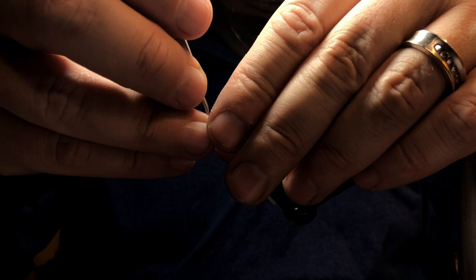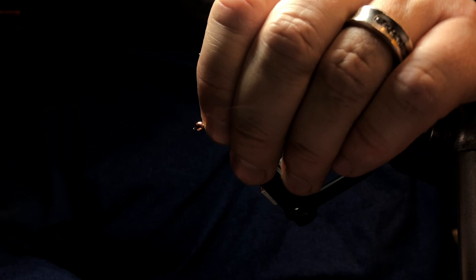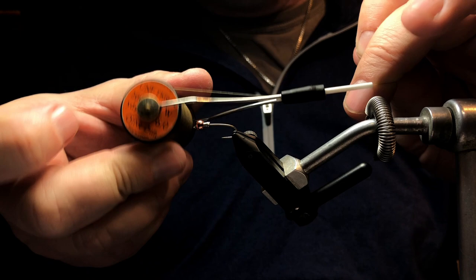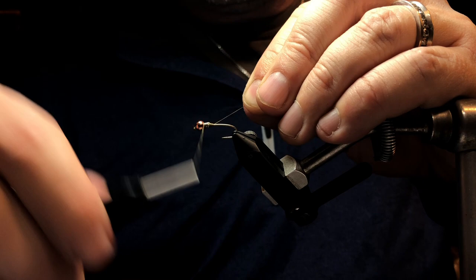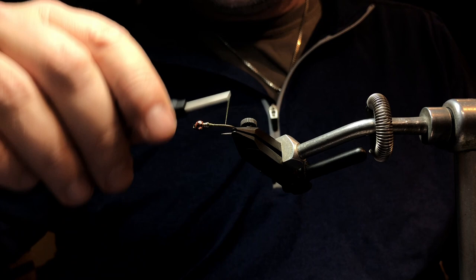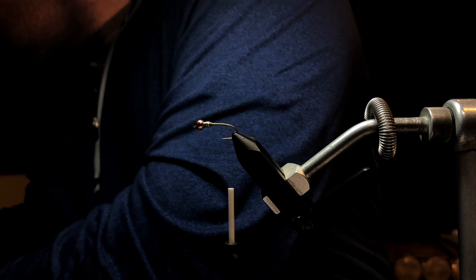The thread that I'm going to use here is a Uni-thread in 6 ought olive. Color doesn't matter that much—go with some black or brown, even red if you want to kind of hot spot towards the front. But with the split back you don't really need to hot spot more unless you really want to. Build up a little thread ramp and then I'm going to wrap towards the bend of the hook, stop just shy of the bend of the hook.